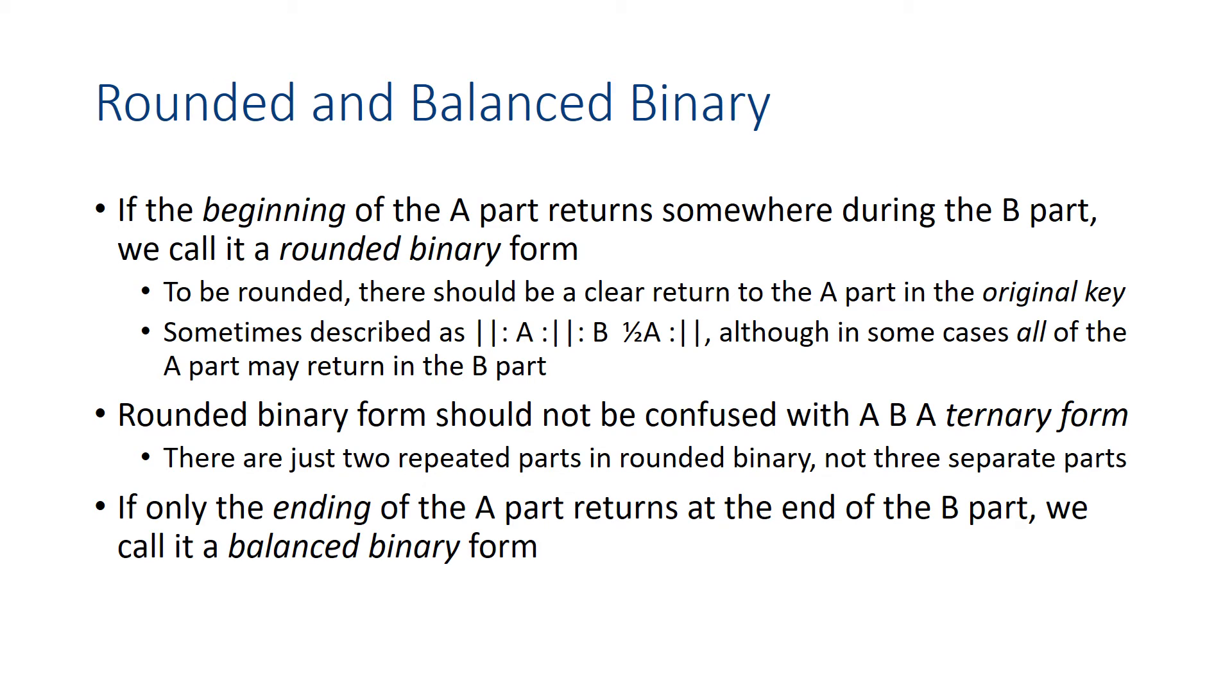Now if the ending of the A part returns at the end of the B part, then we're going to call that balanced binary form. So if the beginning comes back somewhere in B, that's rounded. If the ending of the A part returns in B, then it's balanced. If neither of these things happens, if none of the A part returns in the B part, it's just simple binary form.